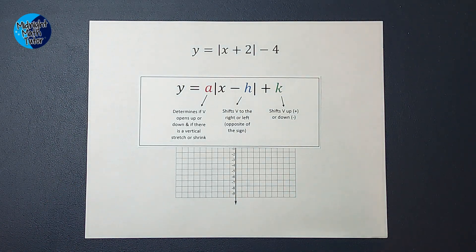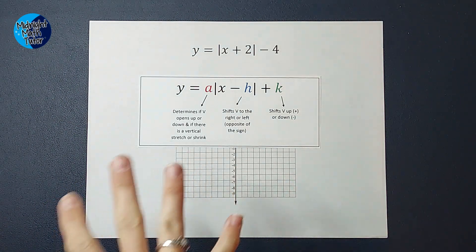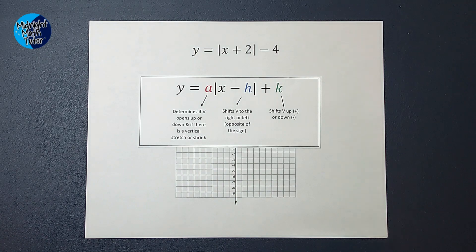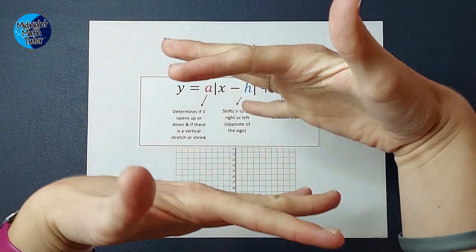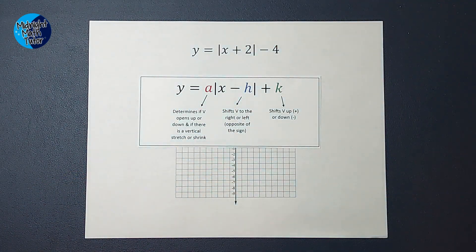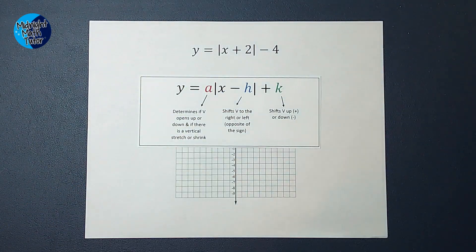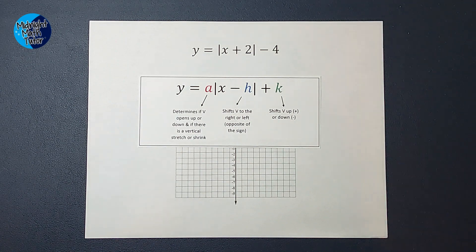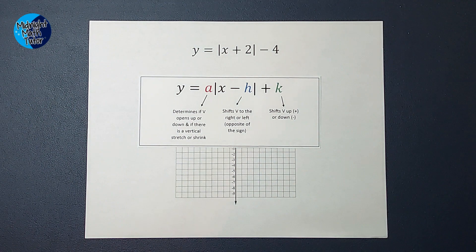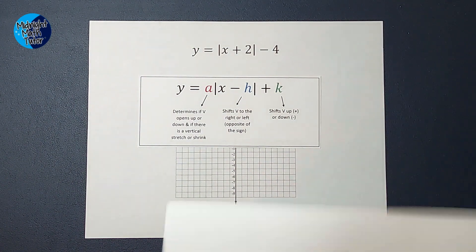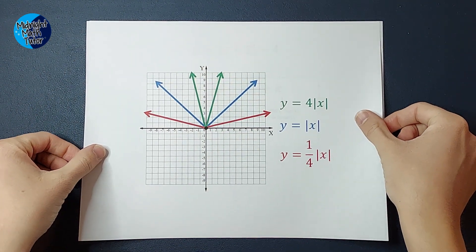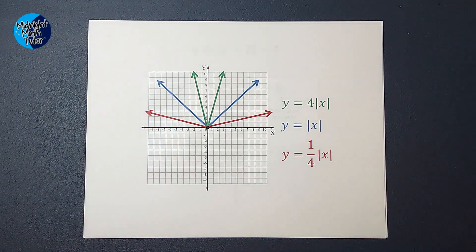Also, if you have a number out front there, if it's a fraction, it is going to compress your graph. Hold with me. If you're like, she's saying a lot of words, hang with me. It's going to compress your graph. If you have a number out there, like two, three, four, five, six, seven, it's going to stretch your graph. And I'm going to show you really fast what that looks like. Even if you're not doing problems like this yet, you probably will be.